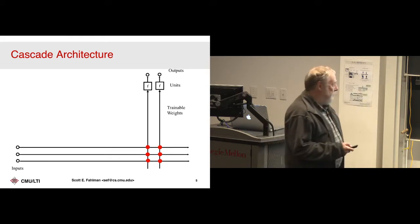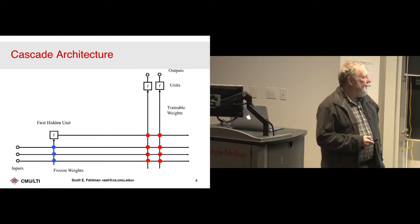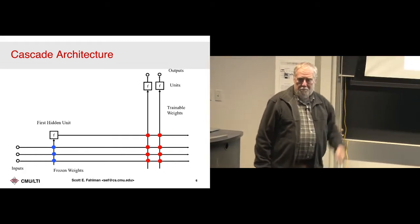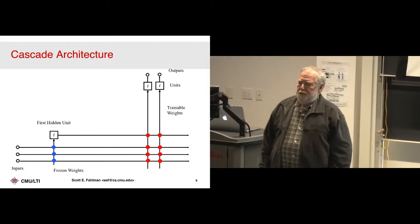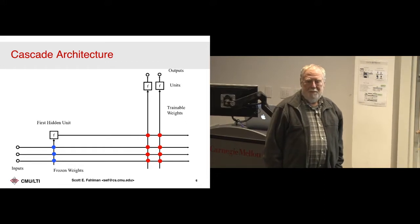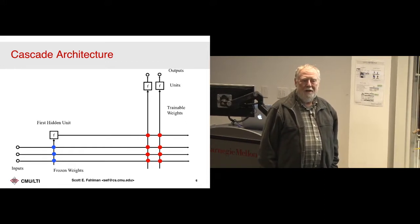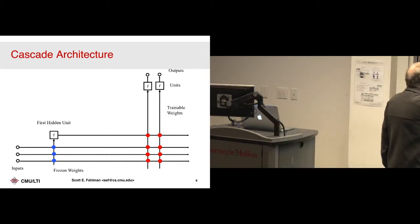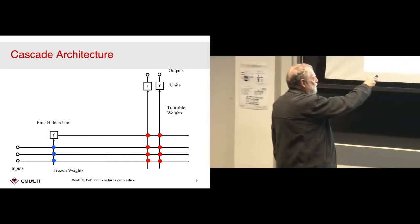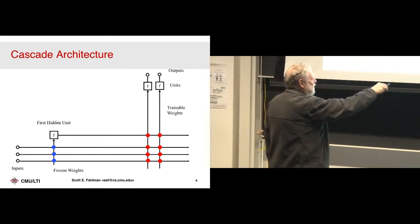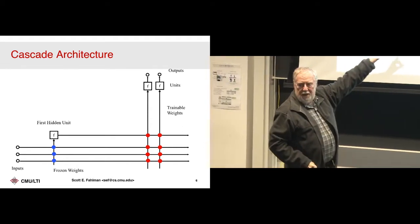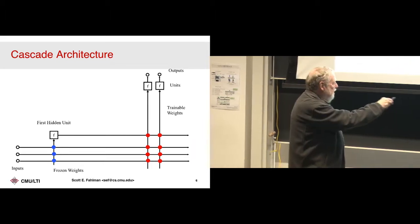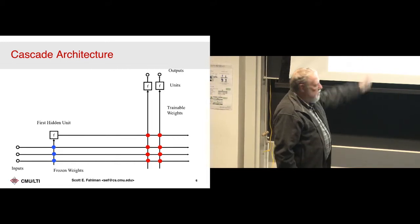This perceptron does as well as it can do. It'll go up, it'll plateau. Maybe that's good enough — in many problems you can solve it with a perceptron. Let's assume there's some residual error we want to get rid of. So let's add a hidden unit. Suppose we can train up a hidden unit that correlates with the residual error. If it can correlate with it, it can cancel some of it. We add this unit with these input weights, correlating with the residual error.